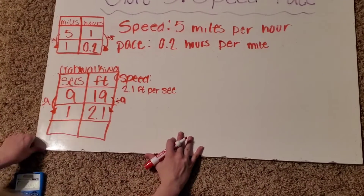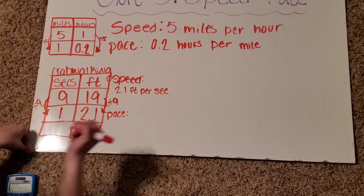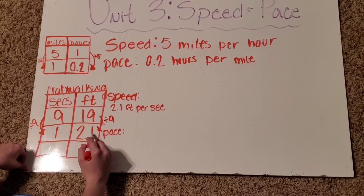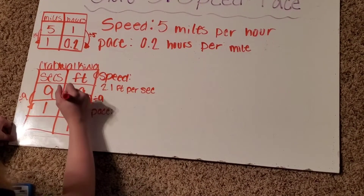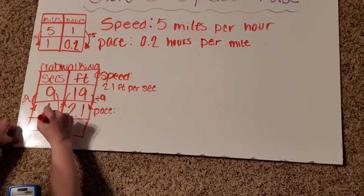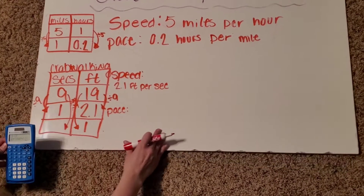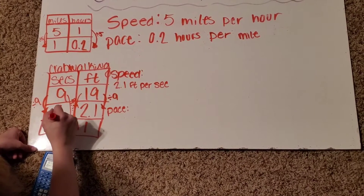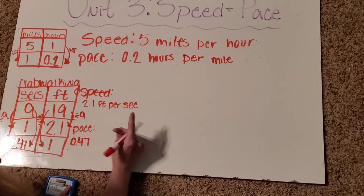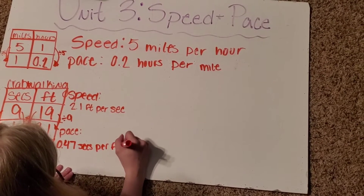Now I want to find my pace, and my pace is when my distance is 1. To do that, I can go from 19 down to 1 — so 19 divided by 19 gives me 1, which means I divide 9 by 19. So 9 divided by 19 is 0.47. My pace is 0.47 seconds per foot.